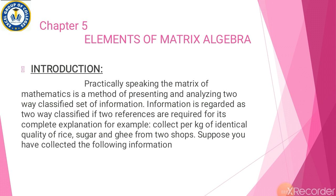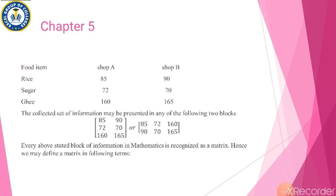Suppose you have collected the following information. Food items hain aapke paas: rice, sugar, ghee. Jab aap Shop A pe gaye hain toh rice aapko 85 mein mila; Shop B pe rice 90 mein mila. Sugar ki baat karay toh Shop A se aapko 72 mein mila, Shop B se sugar 70 mein mila. Ghee Shop A pe 160 mein available hai aur Shop B pe ghee 165 mein available hai. The collected set of information may be presented in any of the following two blocks.